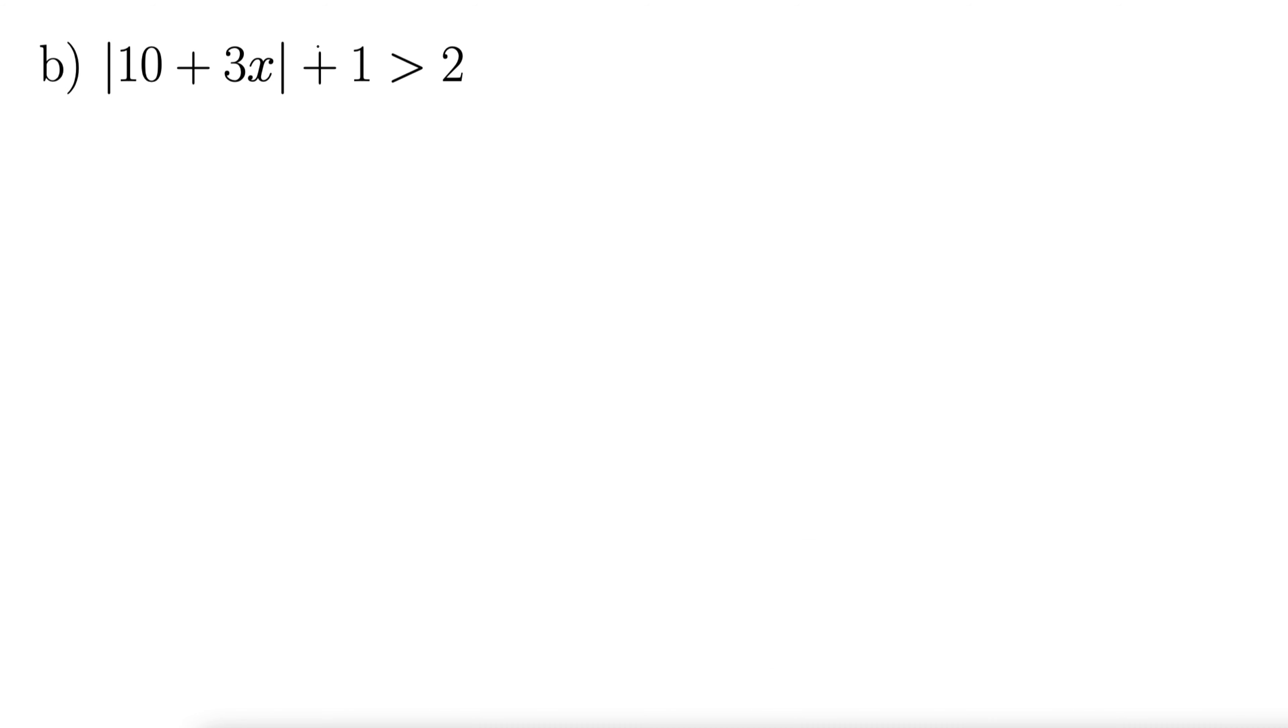Here we have absolute value of 10 plus 3x plus 1 greater than 2. Okay, so again, isolate the absolute value first. Right? Get it so it's the only thing on the left-hand side. Get everything out to the right-hand side. That's what I mean by isolate.